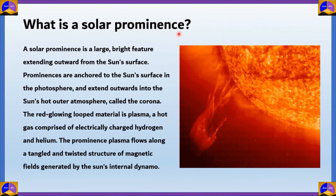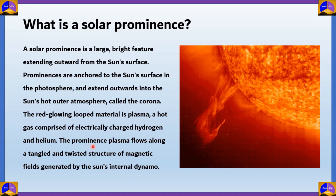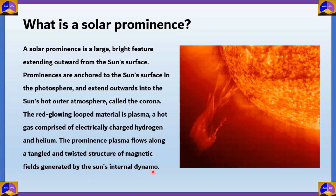What is a solar prominence? A solar prominence is a large bright feature extending outward from the sun's surface. Prominences are anchored to the sun's surface in the photosphere and extend outwards into the sun's hot outer atmosphere, which is called the corona. The red glowing material coming out of prominences is plasma — a hot gas comprised of electrically charged hydrogen and helium. The prominence plasma flows along a tangled and twisted structure of magnetic fields, which are generated by the sun's internal dynamo. These prominences look a lot like twisted arches.